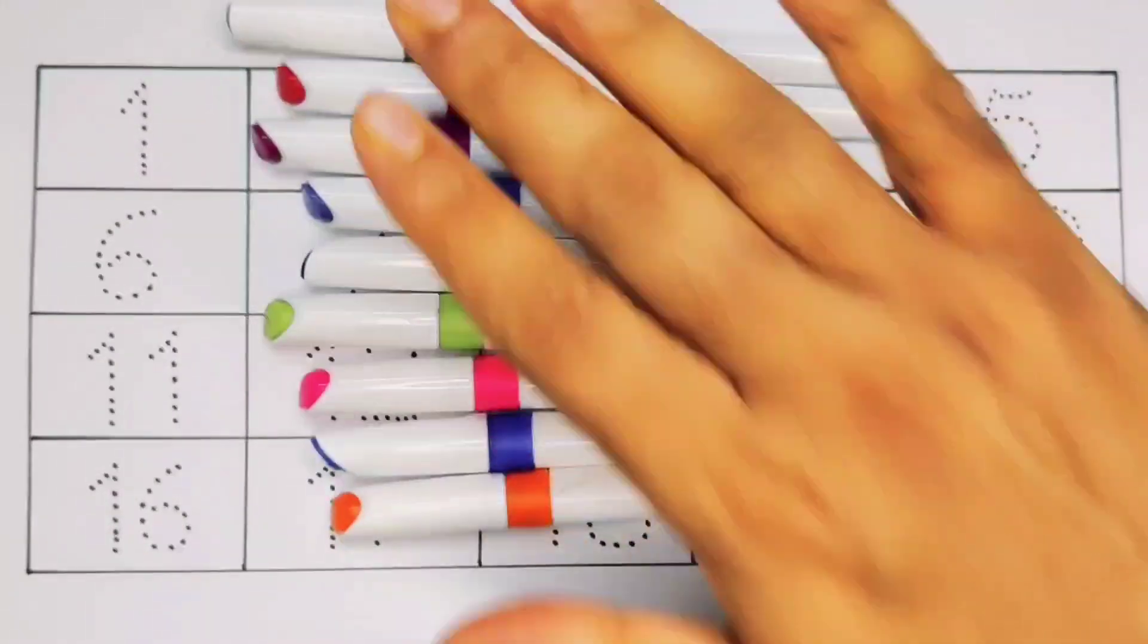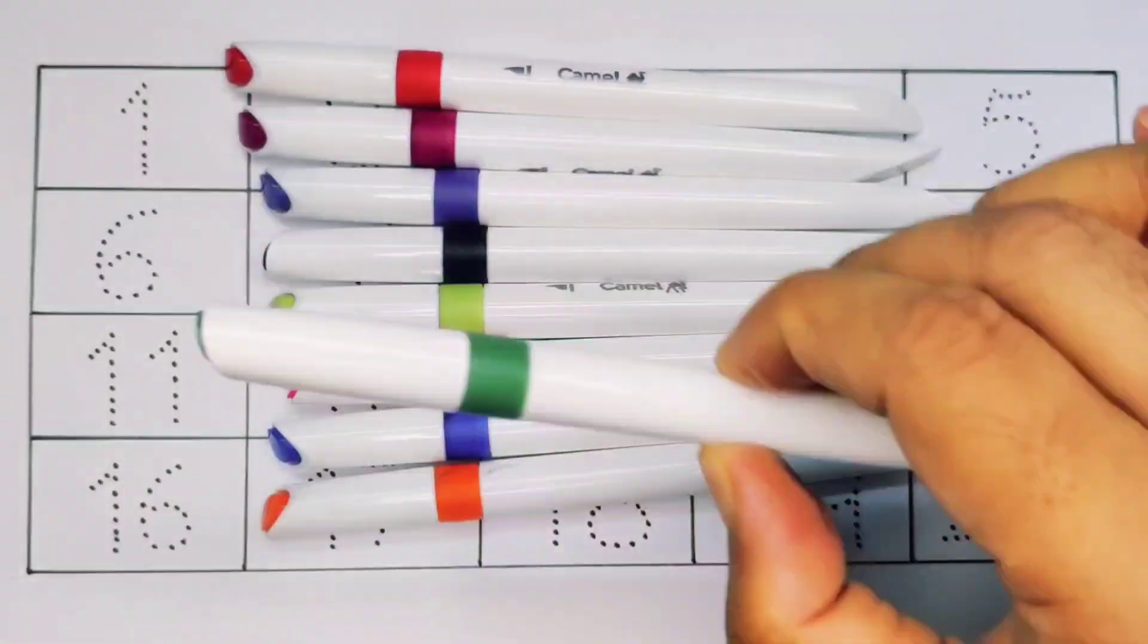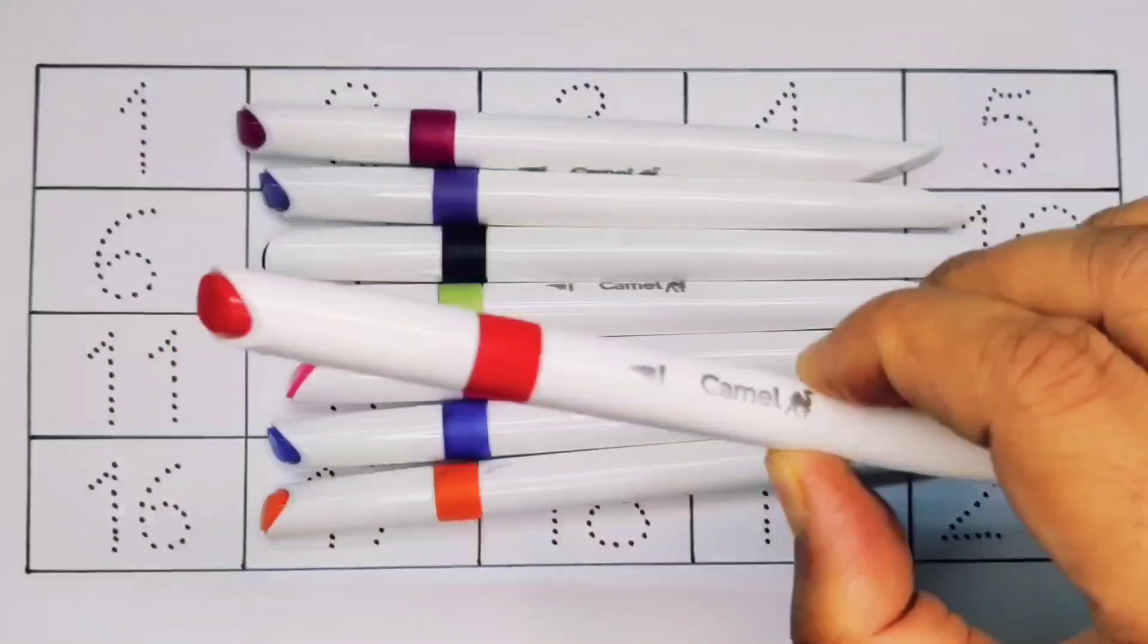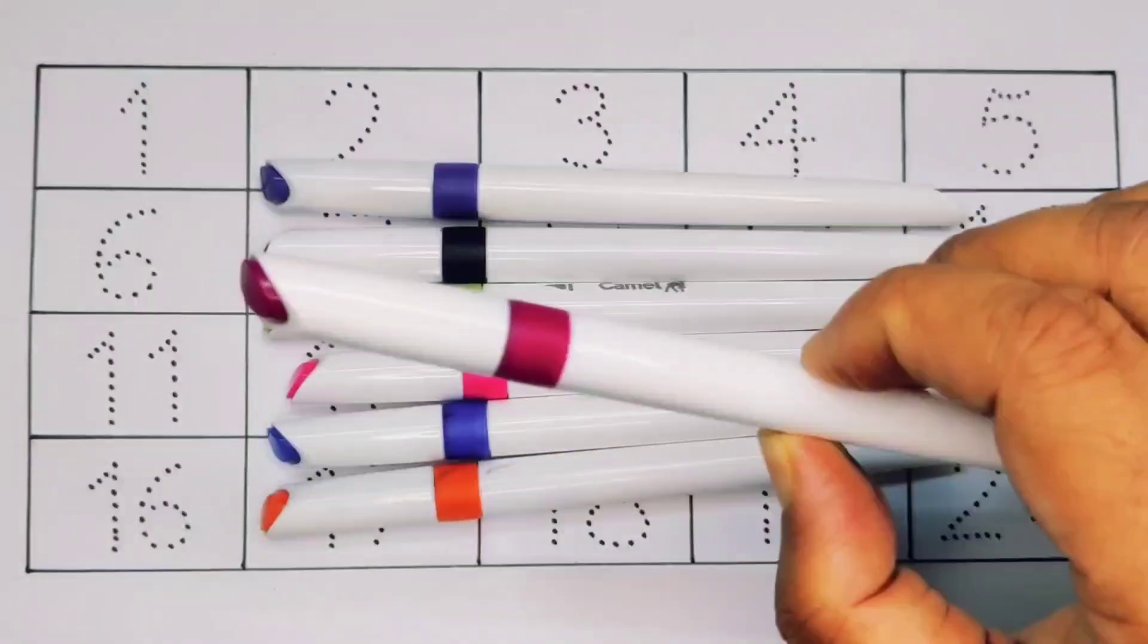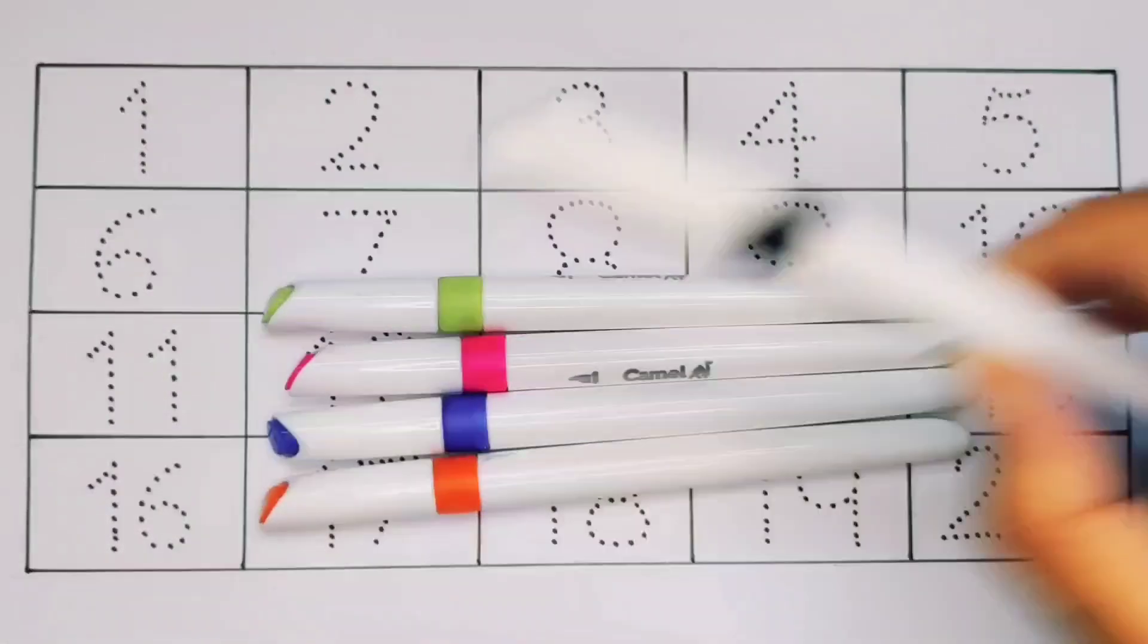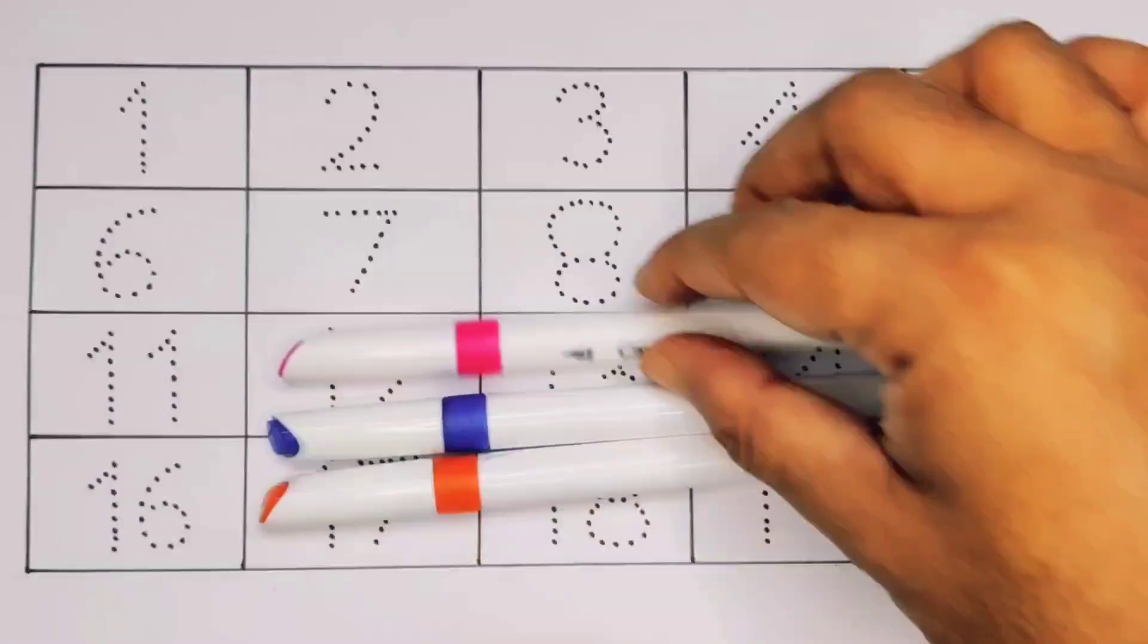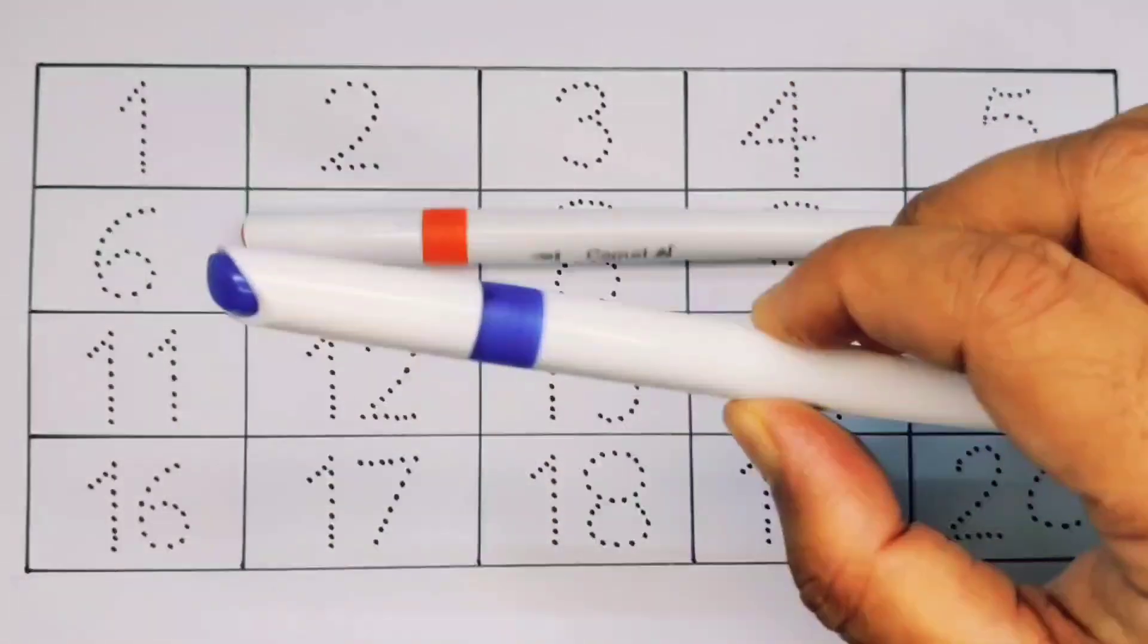Hello kids, welcome to my channel. First we are going to learn the colors: green color, red color, cherry color, purple color, black color, light green color, pink color, blue color.